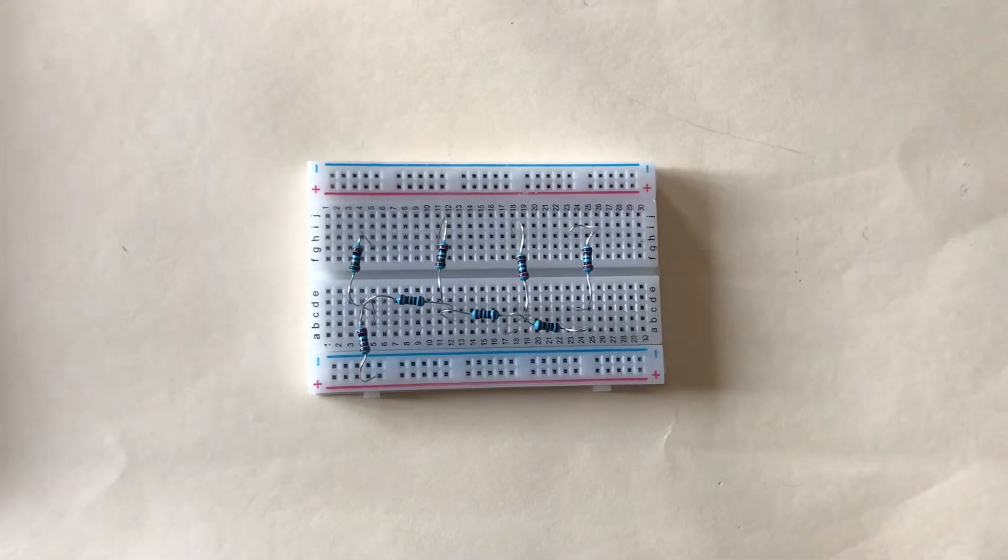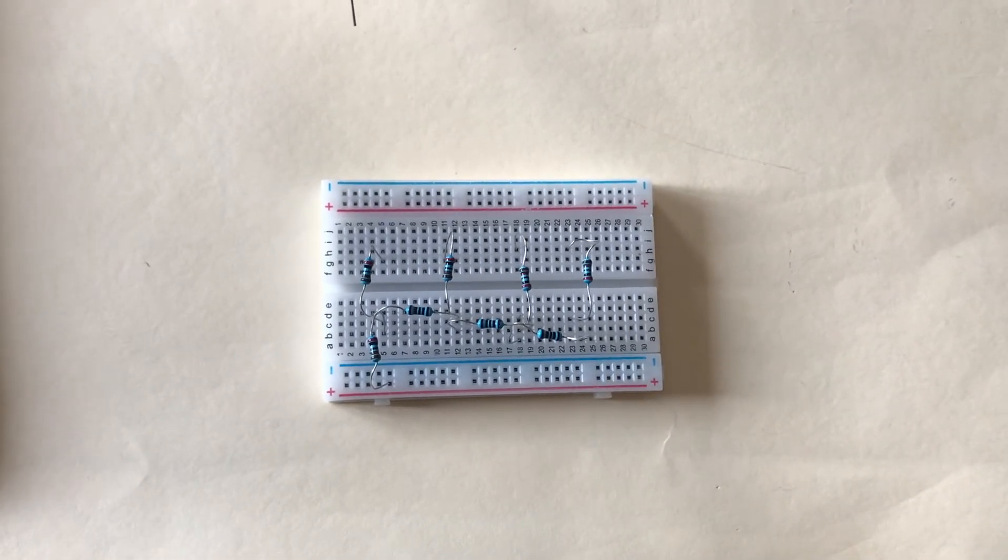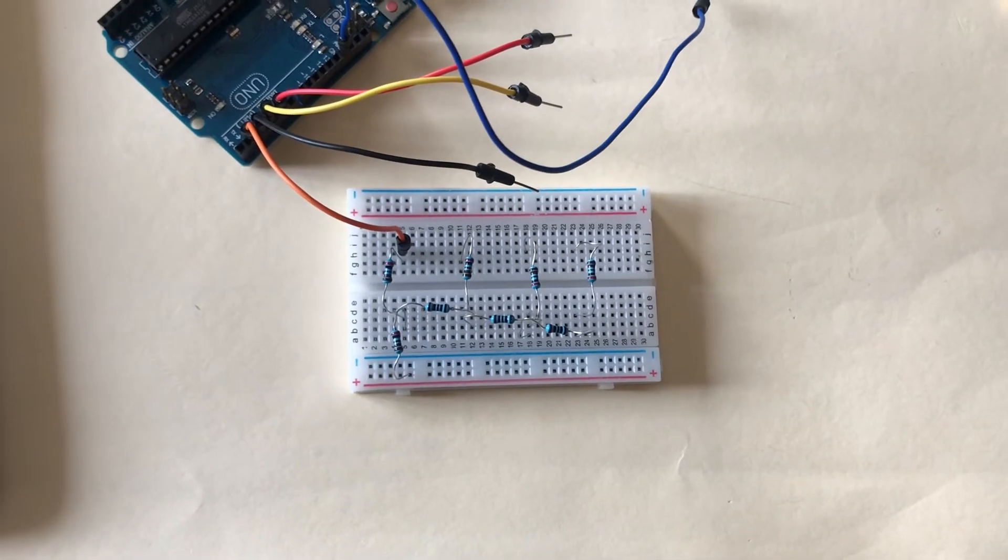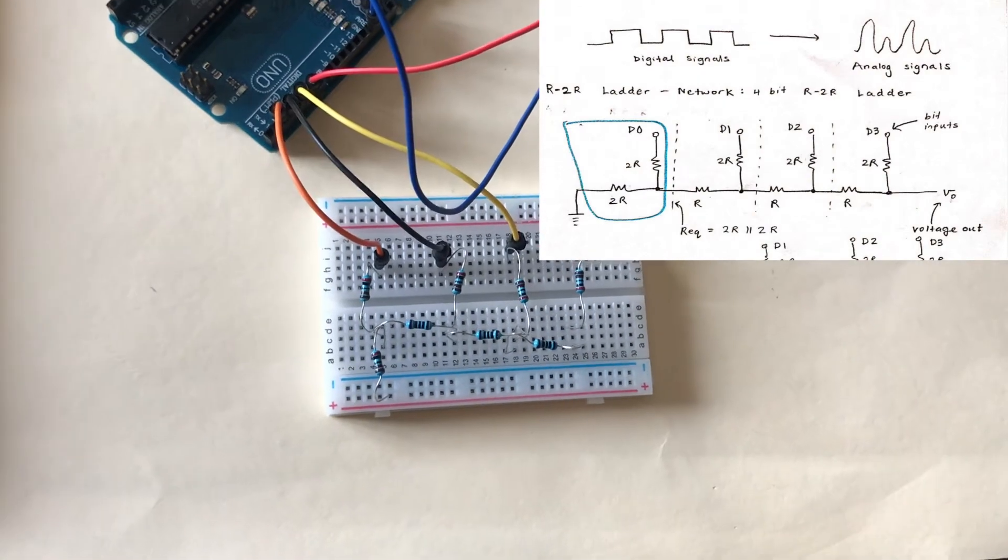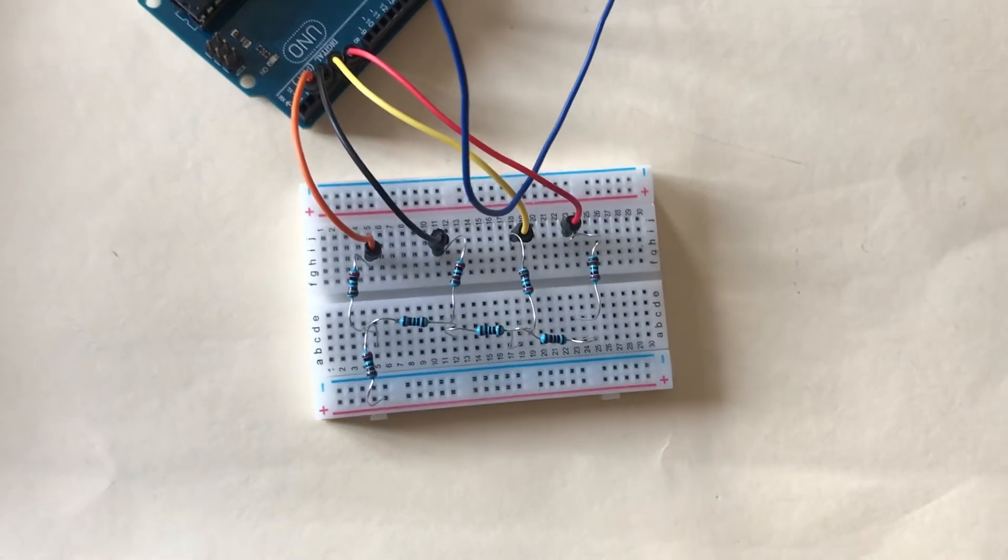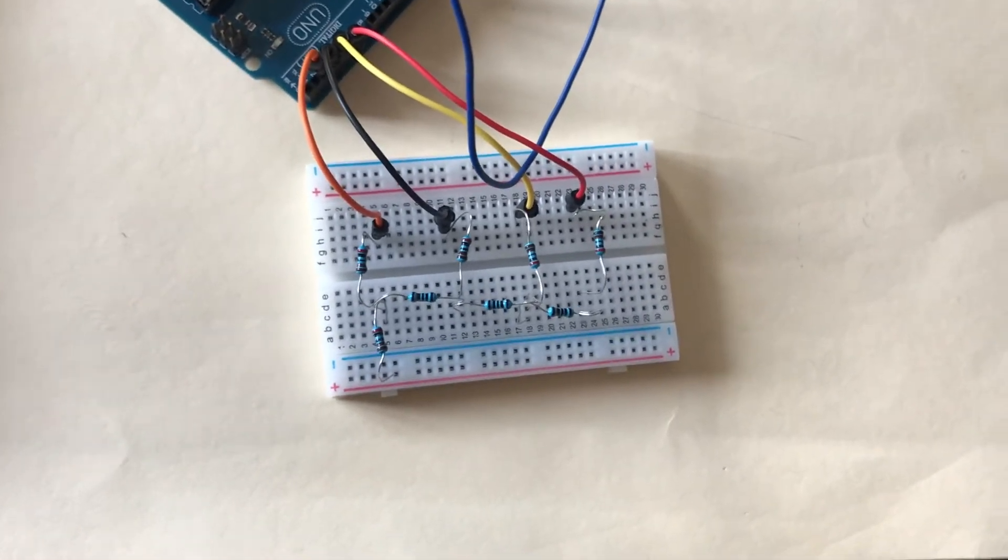And then I'm going to connect the other 2Rs in parallel. And I'm going to connect the Rs horizontally, as you can see on the circuit diagram, because that's how it looks. It kind of looks like a ladder, right? So I'm going to place it just like how it looks on our circuit diagram.